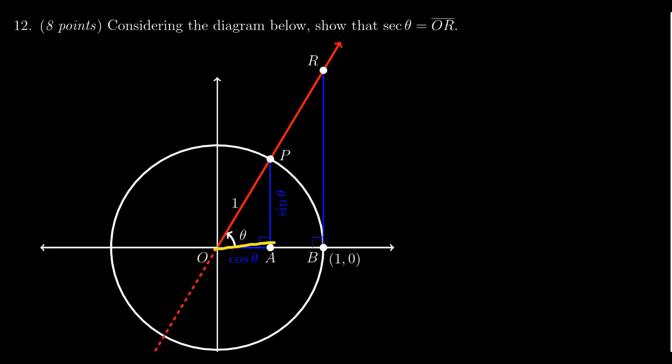We also have the triangle OBR. Relative to angle theta, the side OB has length one, the opposite side BR is unknown, and the hypotenuse OR is also unknown.